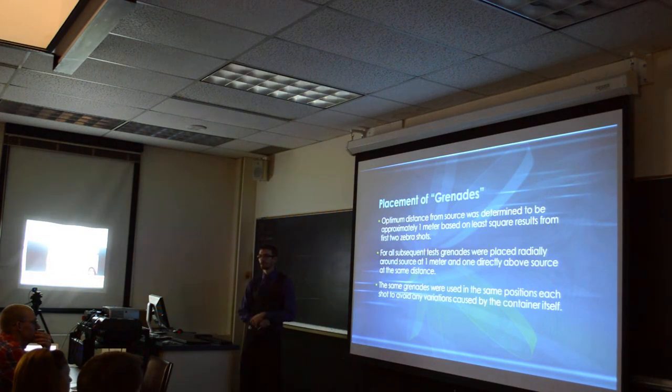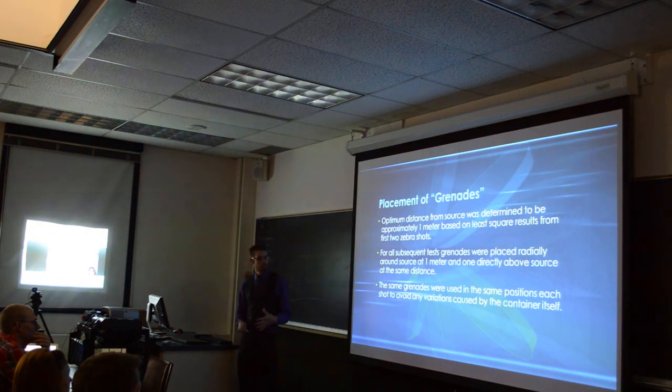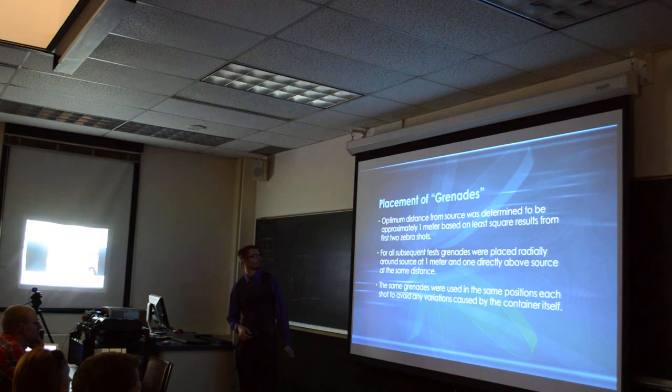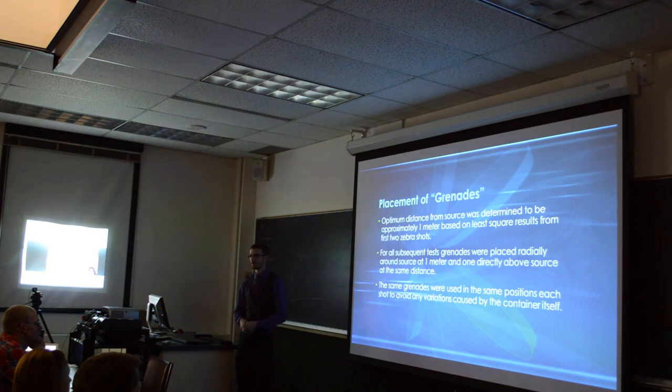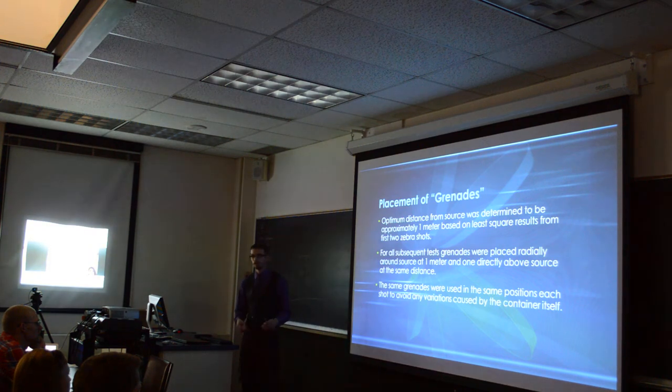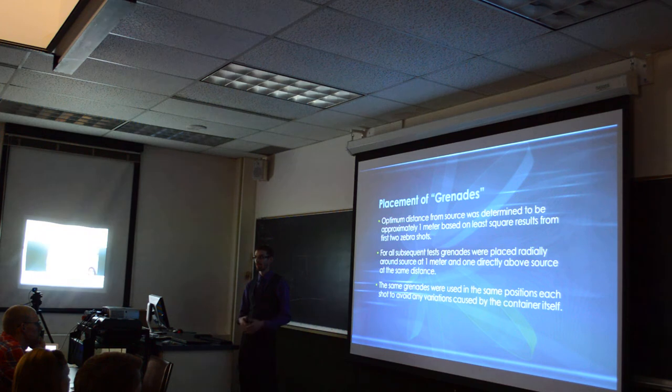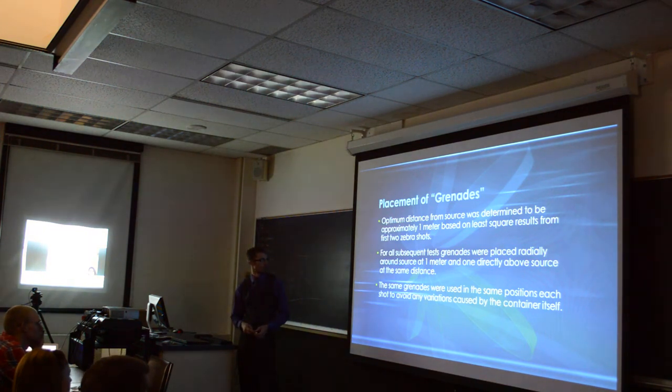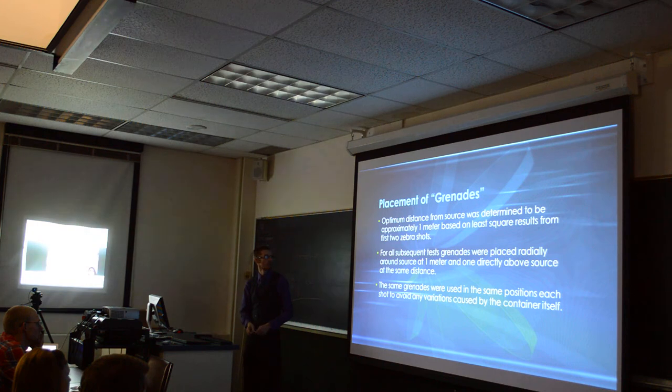Placement of the grenades was determined by the inverse square law on distance. The first one we put at 0.5, 1.5, 2, and then 4 meters away from the testing chamber to begin with. Then we took essentially the one that had the best looking images off of it, intensity wise, and then we used that placement for the next radial testing. And then we put those all at one meter away around the chamber, and then we actually had one on top looking directly at the source.